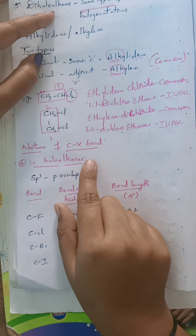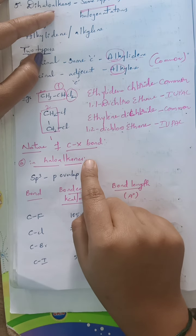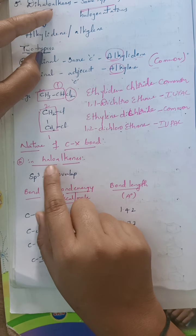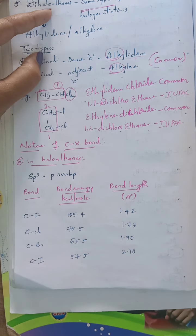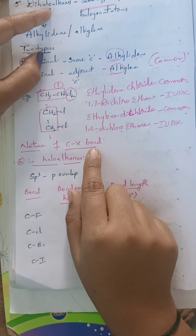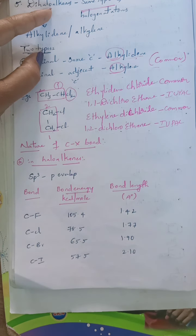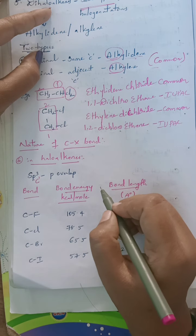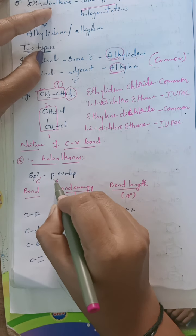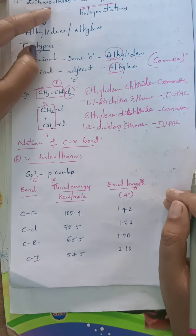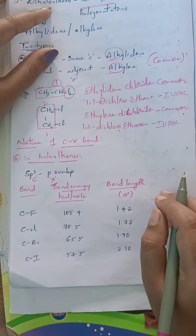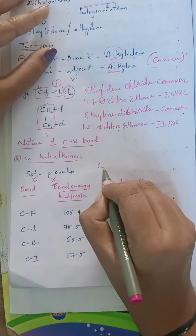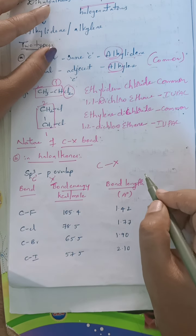Now we will see about the nature of the carbon-halogen bond. In haloalkanes, this carbon-halogen bond is formed by overlapping of the Sp3 hybridized orbital of carbon and the partially filled P orbital of halogen. When these two undergo overlapping, the carbon-halogen bond is formed.